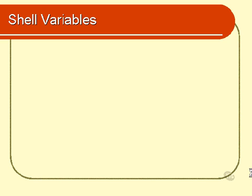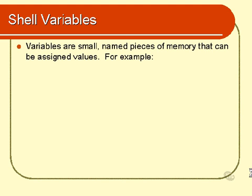What is a variable? Well, if you've programmed in any other programming language, you probably already have a fairly good idea of what a variable is. For the rest of you, I will take a few seconds to explain. The technical definition is that a variable is a small, named piece of memory that can be assigned a value.